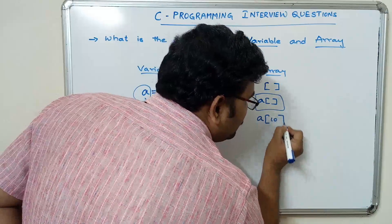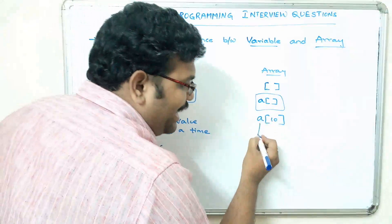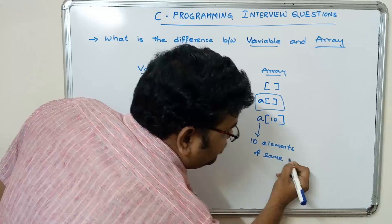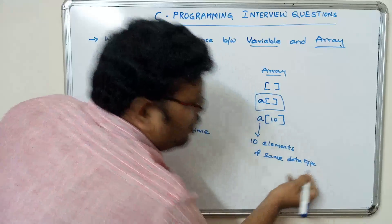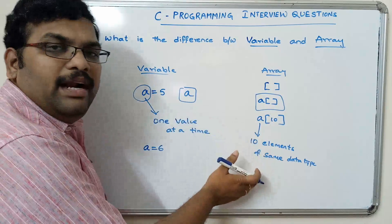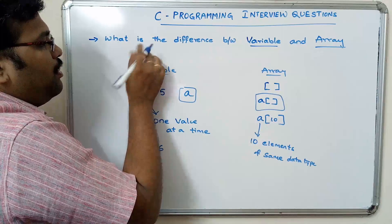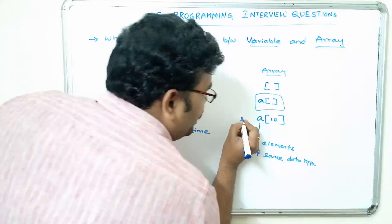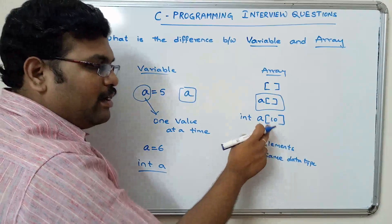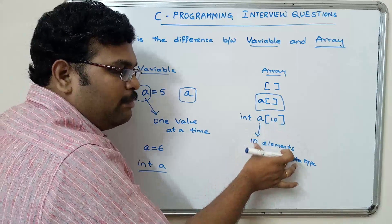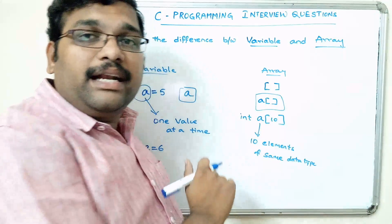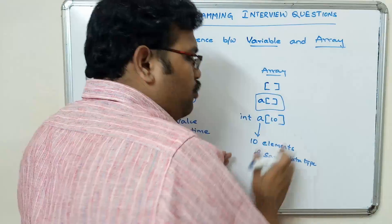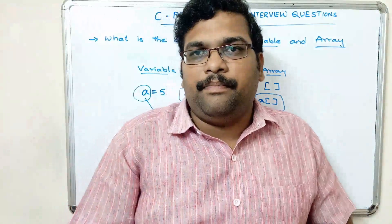If you mention the size a[10], that implies 'a' can hold 10 elements of the same data type. The declaration is common for both variable and array. We write 'int a' — 'a' is a variable which can hold only integer data. Similarly, 'int a[10]' means this array can hold 10 elements of integer data type. That is the difference between variable and array: a variable can hold one value, an array can hold multiple values of the same data type.